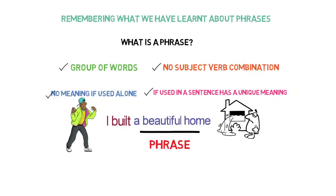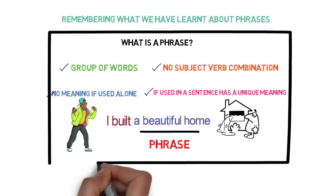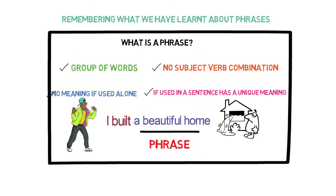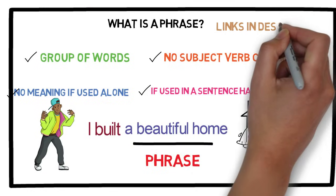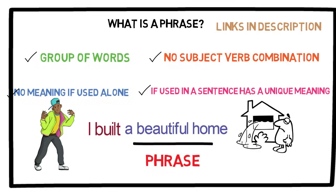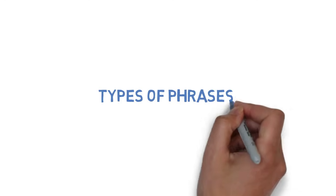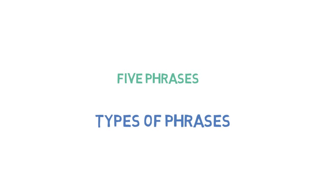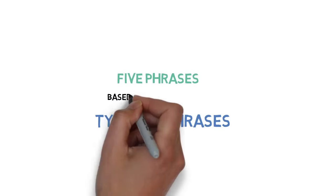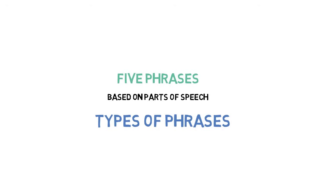Now I think you are clear about phrases. We have also discussed these things in our previous video — please go and check if you haven't already, I will provide the links in the description. There are five different kinds of phrases, each of them from the five parts of speech that we have already discussed in our parts of speech series.